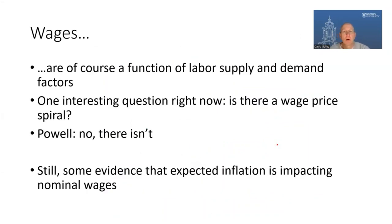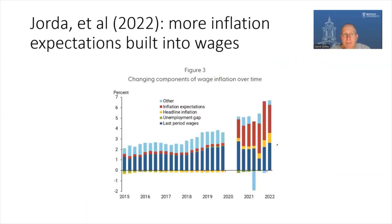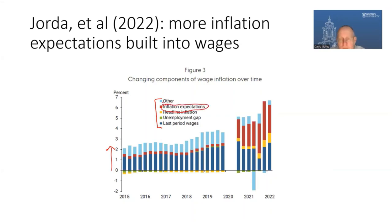Let's take a look at wages — a function of labor supply and labor demand. One of the questions that Jerome Powell and the Fed have been asking is whether there is a wage-price spiral. His suggestion is no, there's not. But even despite that, there is some evidence that expected inflation is correlated with nominal wage growth. Jorda and co-authors recently did an analysis decomposing nominal wage growth. Pre-pandemic, not very much of nominal wage growth was explained by expected inflation measures. But post-pandemic, a substantial fraction of nominal wage growth is correlated with expected inflation.